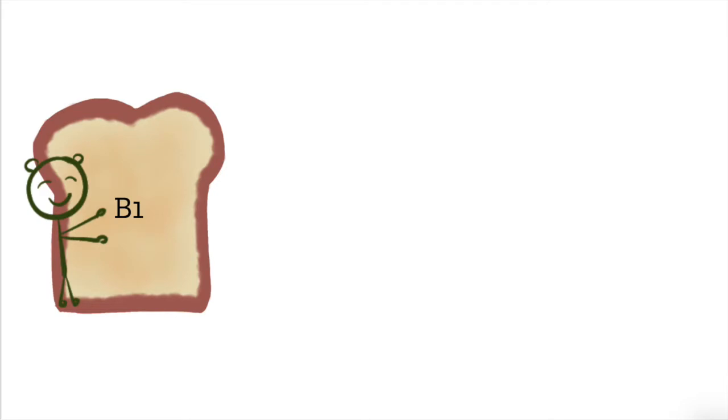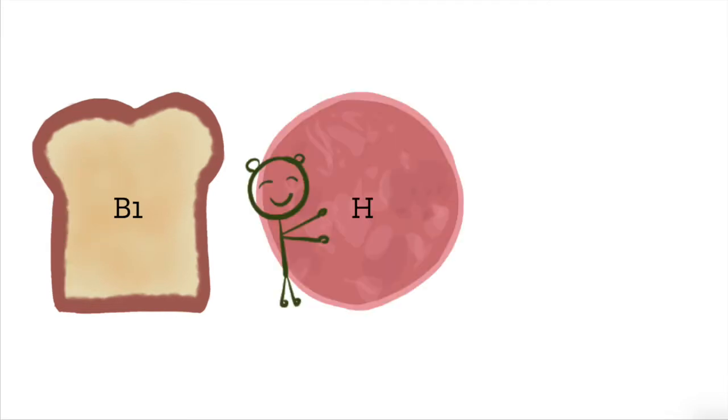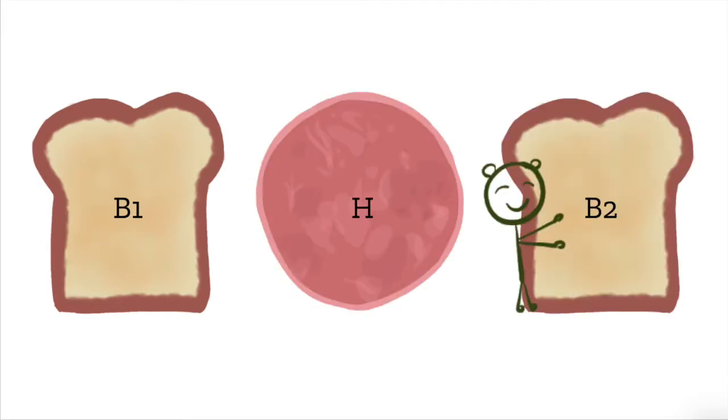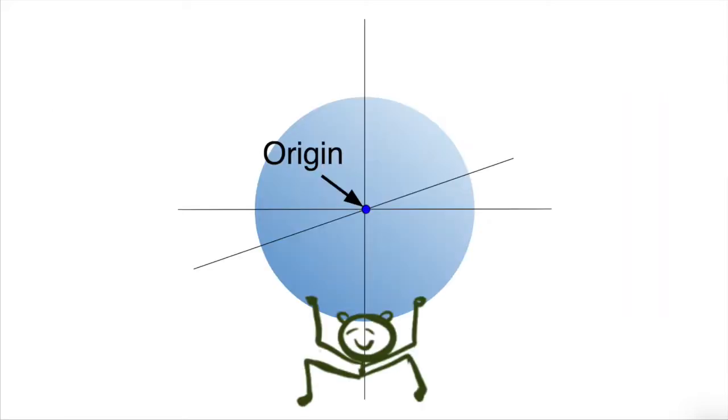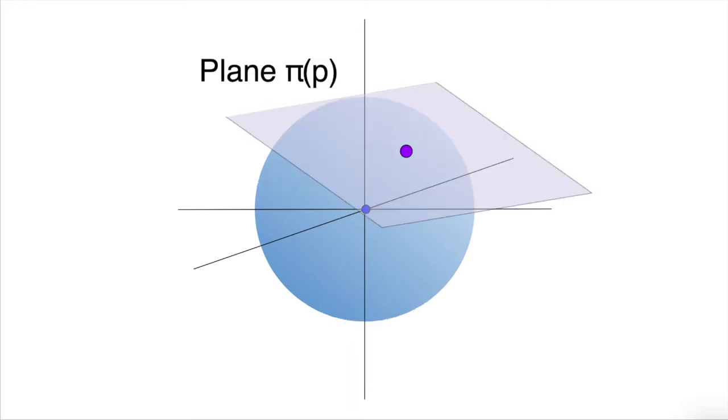Let's call the first slice of bread B1, the ham is H, and the second slice of bread is B2. Let us define a sphere S centered at the origin. At any point P on S, we can form a plane π(P) that is tangential to the surface of S.